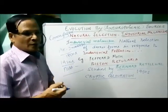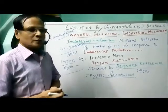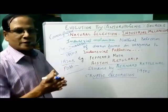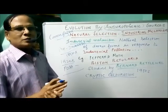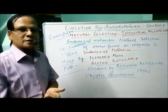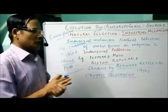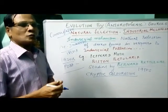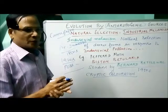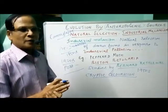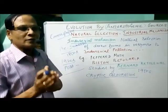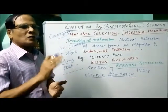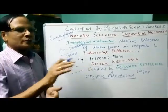Other examples of anthropogenic evolution include the development of herbicide- and pesticide-resistant varieties. We developed herbicides and pesticides to kill weeds and pests — this is a human activity. In the course of time, resistant varieties to herbicides and pesticides developed, resulting in the origin of new species through human activity.